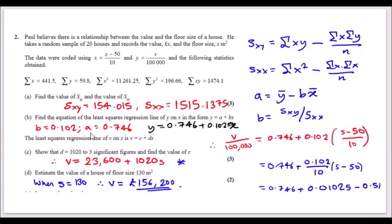Part d estimates the value of a house with floor size 130 m². Substitute s = 130 into the equation from part c: v = 23,600 + 1020 × 130, giving a house value of approximately £156,200.